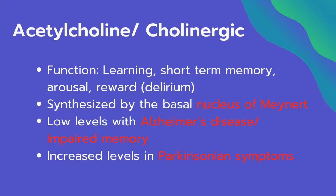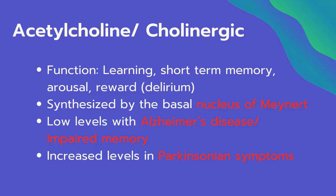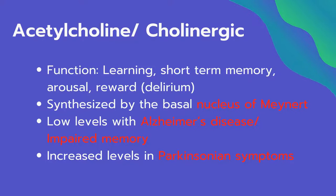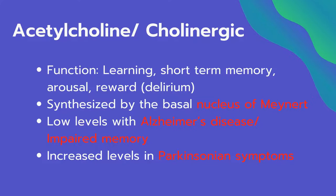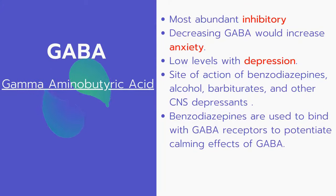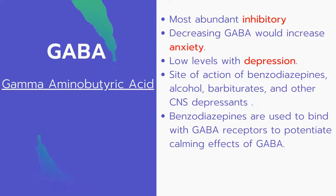The fourth neurotransmitter is acetylcholine, also known as cholinergic. Its functions include learning, short-term memory, arousal, and reward. It is synthesized by the basal nucleus of Meynert. Low levels of acetylcholine are seen in Alzheimer's disease and impaired memory, while increased levels are seen in patients with parkinsonian symptoms.